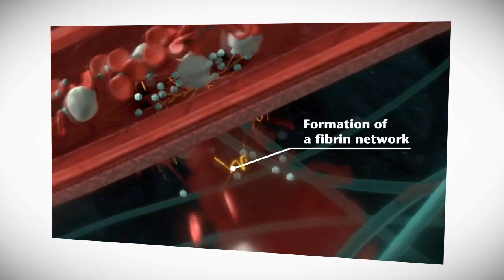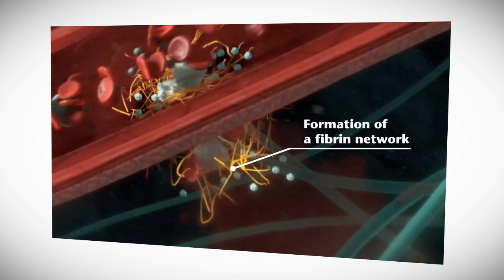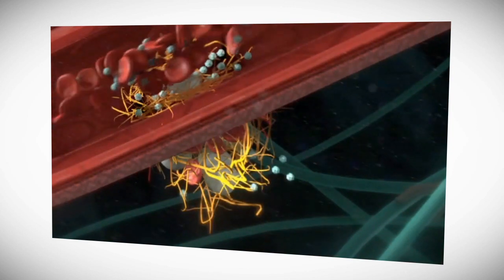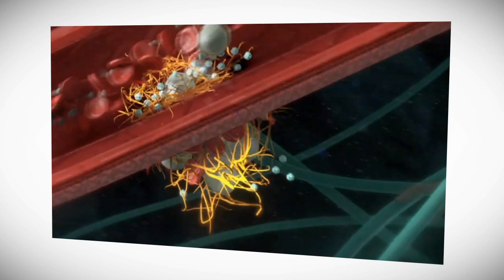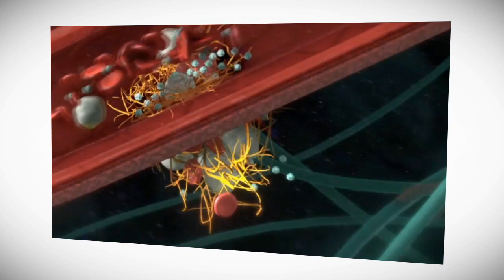Then fibrin threads are formed which reinforce the platelet aggregate. Erythrocytes and leukocytes are then trapped in the fibrin network, which leads to the formation of a tight clot that eventually stops the bleeding.